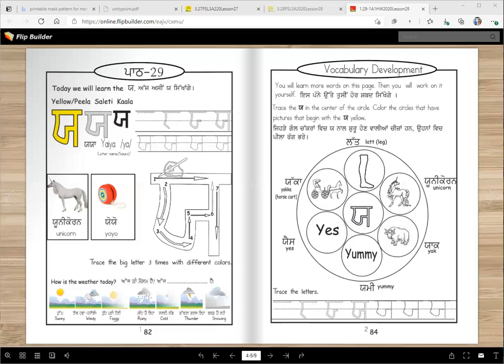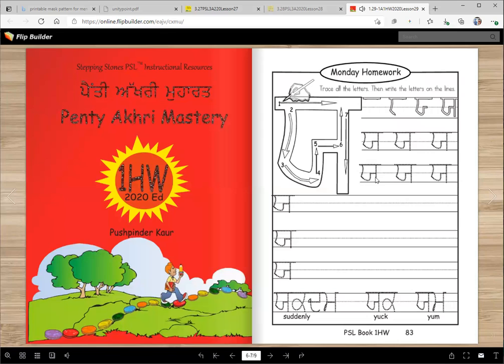Now this is your homework page - Monday homework. You trace the letters, color the letters right here nice and big, maybe three times. You can do that. Then this one also, then trace over, then you write your own, maybe five or six or seven or eight. Then you read this word - yaktam. Yaktam means suddenly. Yaktam gubara tut gya, fat gya, right? Suddenly the balloon burst. Yuck, yuck means something you don't like to eat. Yum is delicious, right? That's on page 83 in your homework book.